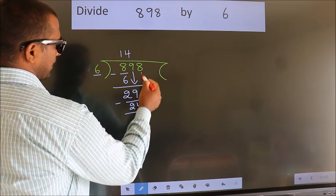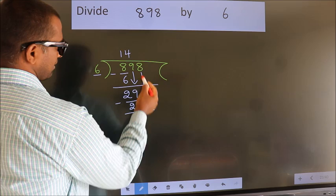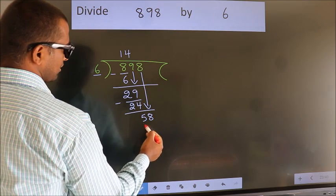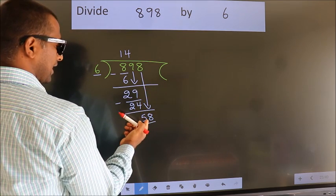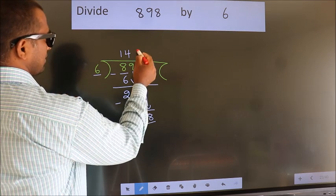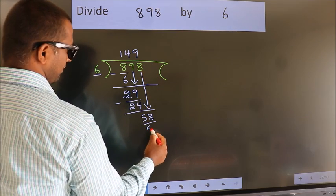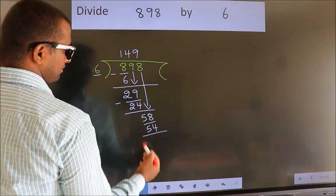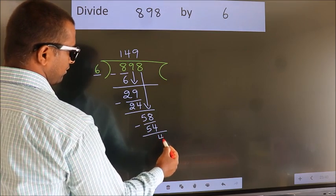After this, bring down the beside number. So 8 down. So 58. A number close to 58 in 6 table is 6 nines 54. Now we subtract. We get 4.